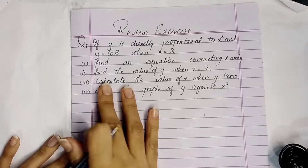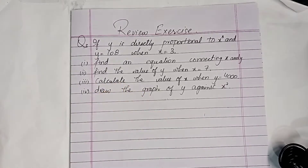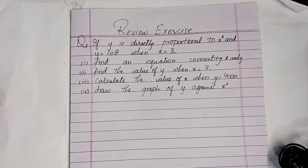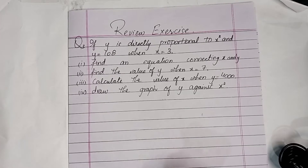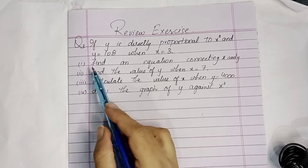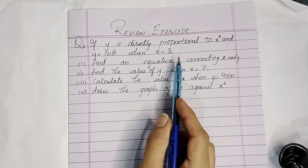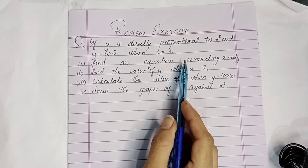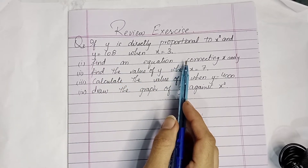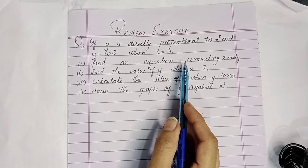If y is directly proportional to x cubed and y is equal to 108 when x is equal to 3, find an equation connecting x and y. Part 1: we have to find out the equation that connects x and y.